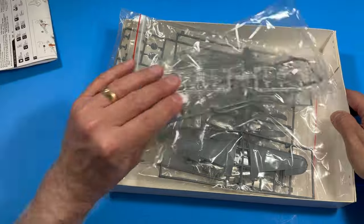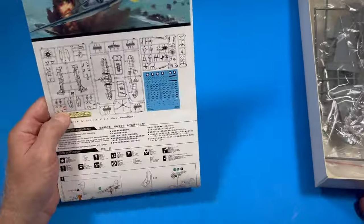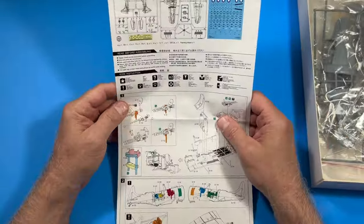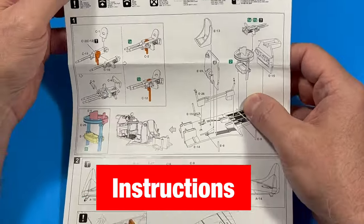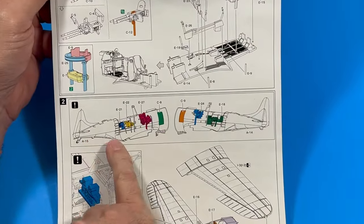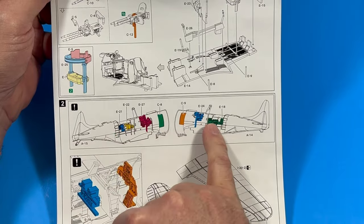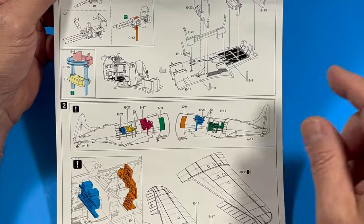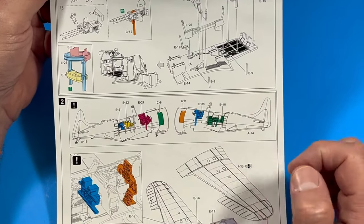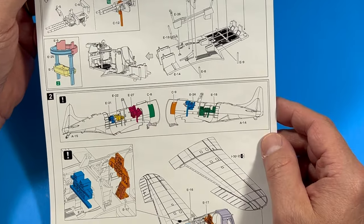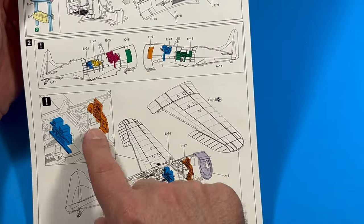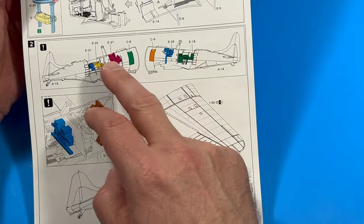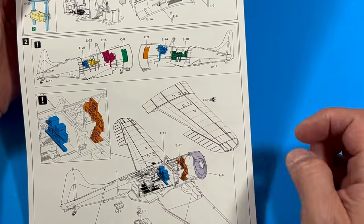Alright, so we're going to take a look at each sprue individually. And I'll get those open. First, let's take a look at the instructions. So first step, start with the guns and then you build a cockpit. And then these parts here, the ones that are colored are individual parts that you cut off and glue into the fuselage halves. And then part of step two. There's a lot here. You've got these. And you also are going to attach the wings.